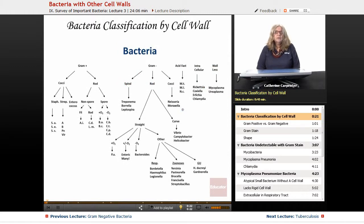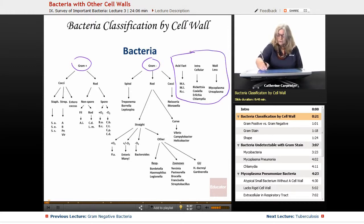So in terms of classifying bacteria by the cell wall, you can see that of course we have the gram-positive bacteria, the gram-negative bacteria, and then we have these bacteria that don't fit under either definition. And those are the ones we're going to talk about today.